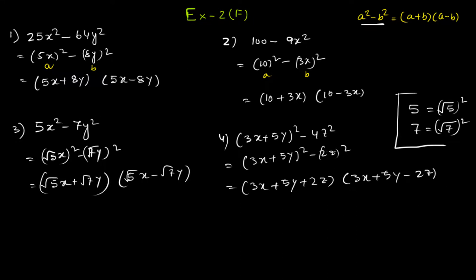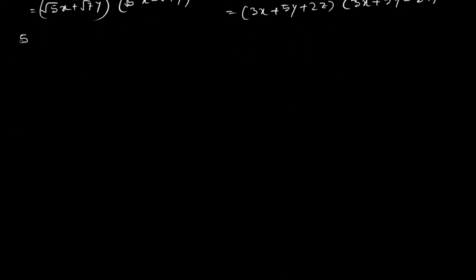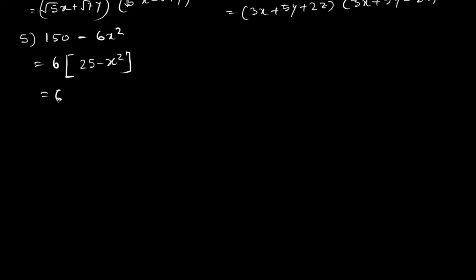Remember, we are using the formula a² - b² = (a + b)(a - b). For question 5, we can take 6 common, which leaves us with 25 - x². This can be written as 5² - x², and applying the formula gives (5 + x)(5 - x), multiplied by 6.